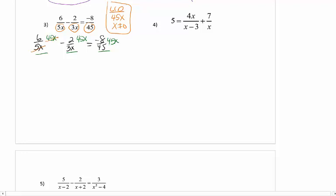5X goes into 45X, and it leaves you with a 9, so I'm left with a 6 times 9, which is 54. My second piece here, 3X goes into 45X. That's going to leave me with a 15, so I have a negative 2 times 15, which should give me a negative 30. And for this right-hand term, the 45s cancel. Be careful, it's a negative 8X that I'm left with.